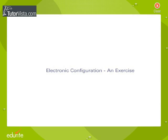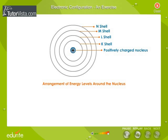Every element has around its nucleus different energy bands or levels at varying distances in which the electrons move about. These are called energy shells. K, L, M, and N are four main shells near the nucleus in which electrons revolve.